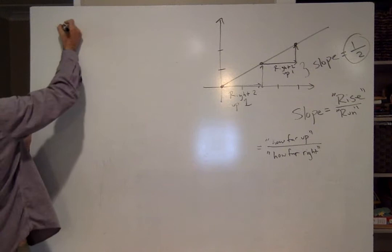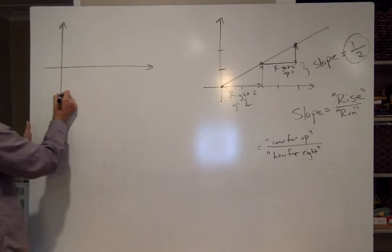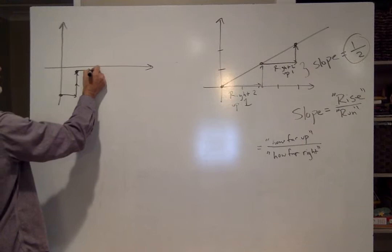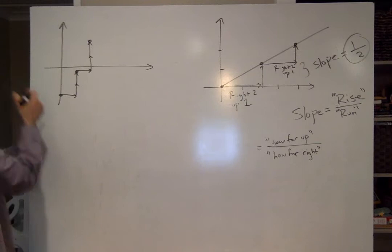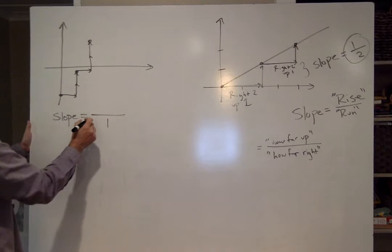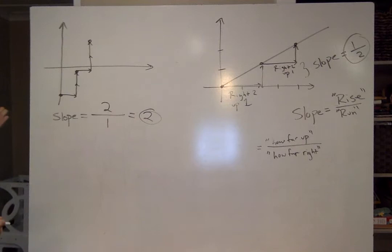If I have a graph where I go over 1 and up 2, and over 1 and up 2, the slope is how far do I move to the right on the bottom. I move right 1. And how far do I move up? I move 2. So the slope is 2 over 1, which is just 2. Pretty easy.